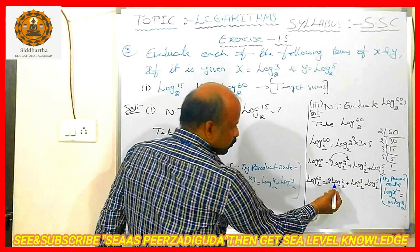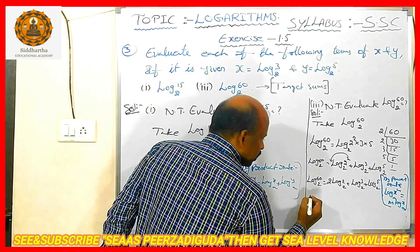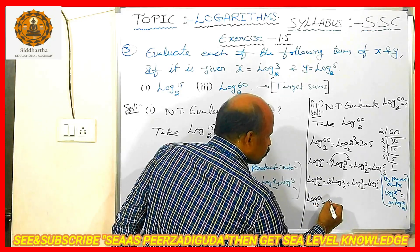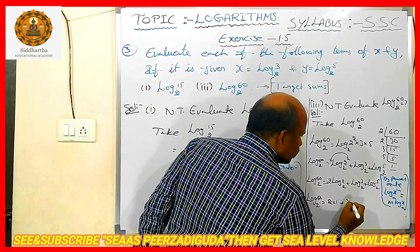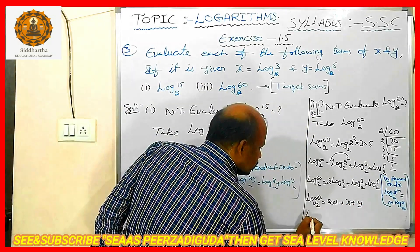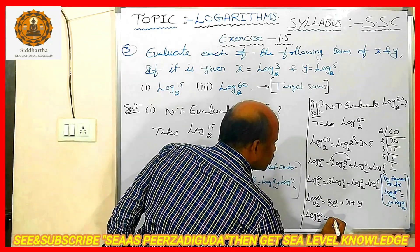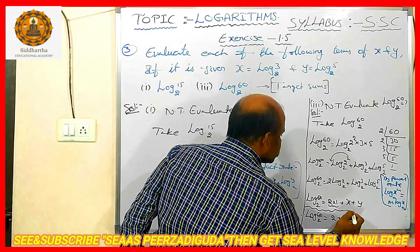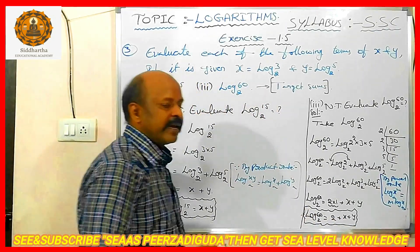Already we know log 2 base 2 value is 1. By using the formula log a base a equals 1, that is log x base x equals 1. So we get 2 into 1 plus log 3 base 2, and log 3 base 2 value is x, plus log 5 base 2 value is y. Therefore, log 60 base 2 equals 2 times 1 plus x plus y, which is 2 plus x plus y. Therefore, log 60 base 2 in terms of x and y is 2 plus x plus y.